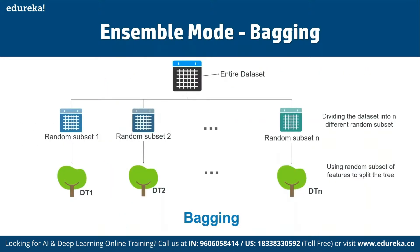We create multiple decision trees from bootstrap data sets. Since we are making a random forest, we will not consider the entire data — instead, we use a random subset of variables at each step.